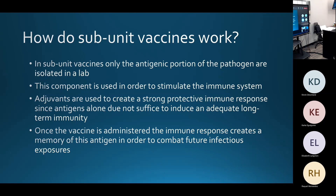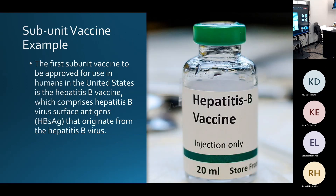Adjuvants are added to that component in order to create a stronger, more protective immune response, since that small portion of the antigen is not strong enough to produce adequate long-term immunity on its own. Once the vaccine is administered, the immune response creates a memory of the antigen in order to combat future infections. The very first subunit vaccine approved in the U.S. was the hepatitis B vaccine, derived from the hepatitis B virus.